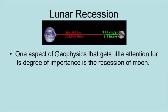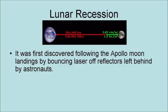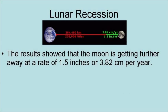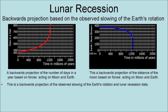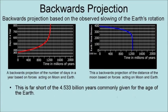One aspect of geophysics that gets little attention relative to its degree of importance is the recession of the Moon. The Moon is slowly getting farther away and slowing the Earth's rotation in the process. It was first discovered following the Apollo Moon landings by bouncing lasers off reflectors left behind by the astronauts, which were designed to accurately measure the Earth-Moon distance. The results showed that the Moon is getting further away at a rate of 1.5 inches or 3.82 centimeters per year. Furthermore, a day is getting longer by 1.7 milliseconds per day per century. Projecting the current data back using the laws of physics, the Moon would have been locked in a geosynchronous orbit around the Earth about 1.25 billion years ago — far short of the 4.533 billion years commonly given for the age of the Earth.